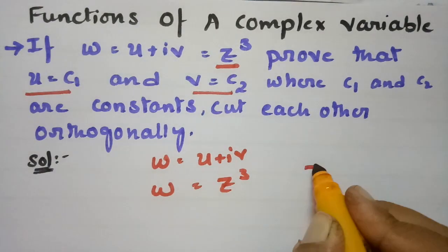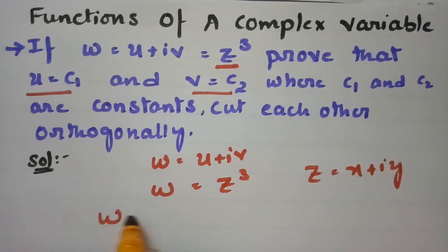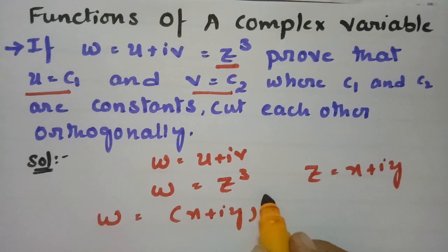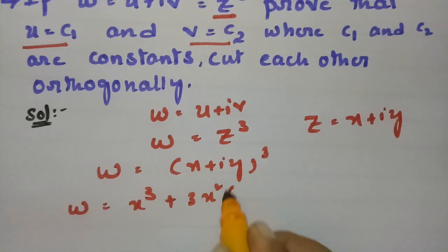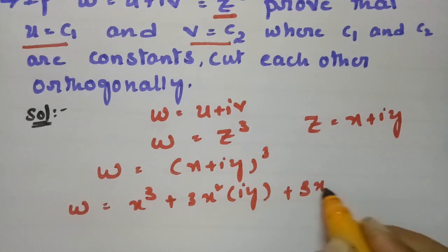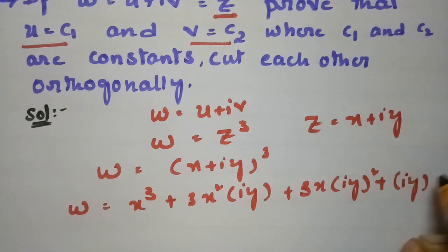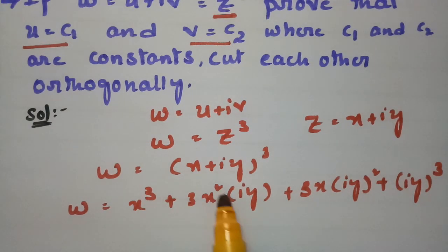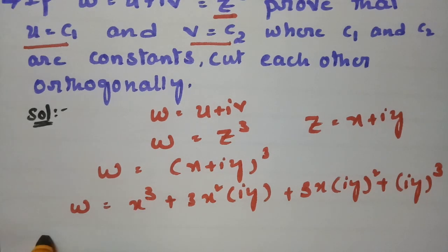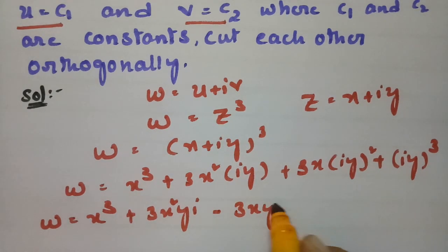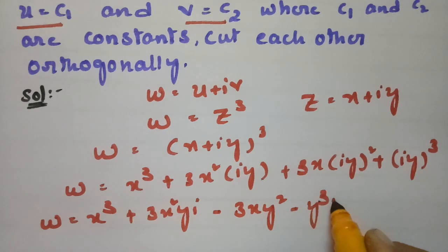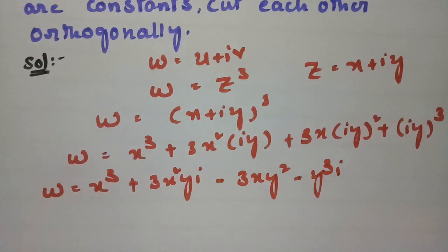Since w = z³ and z = x + iy, we get w = (x + iy)³. Using the binomial formula, (a + b)³ = a³ + 3a²b + 3ab² + b³, we expand this. So w becomes x³ + 3x²(iy) + 3x(iy)² + (iy)³, and since i² = -1, we simplify the terms involving i.